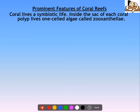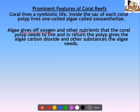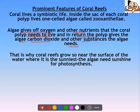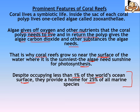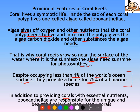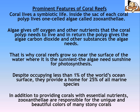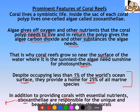Algae gives off oxygen and other nutrients that the coral polyp needs to live. And in return, the polyp gives the algae carbon dioxide and other substances the algae needs, besides giving it the space. Coral reefs hamesha surface pe hi kyun hotay hain? Kyunki wahan pe light chahiye hoti hai — algae ko photosynthesis karne ke liye, aur wahan pe light available hai. They occupy less than 1% of the world's ocean surface but provide home to 25% of all marine species. In addition to providing essential nutrients, zooxanthellae also gives corals their color — yeh bhi algae provide karta hai.